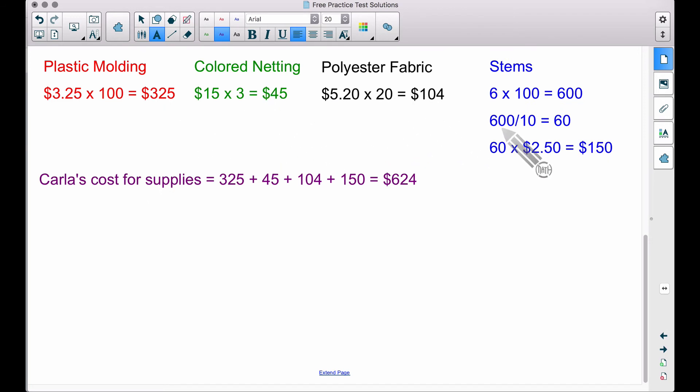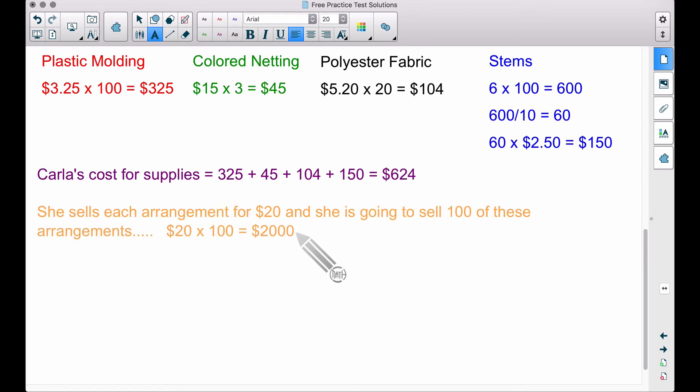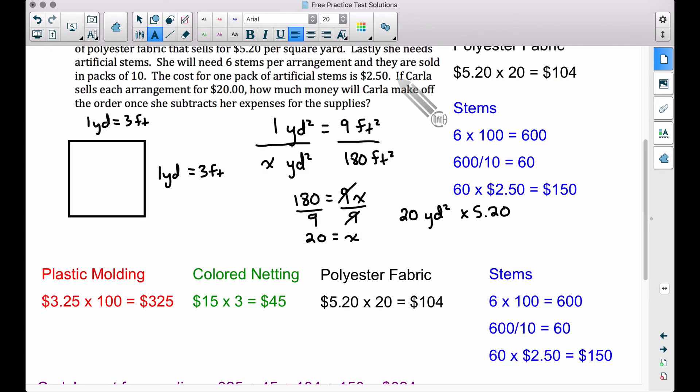So let's take all four of these costs, find the sum. Carla's cost for supplies will be $624. And since the problem stated, she's going to sell each arrangement for $20 and recall she is going to sell 100 of these arrangements, $20 per arrangement times 100 arrangements is going to be $2,000.